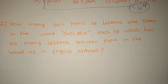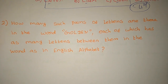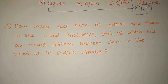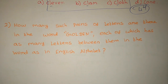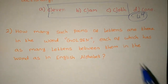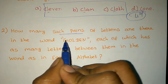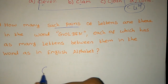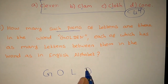How many pairs of letters are there in the word GOLDEN? Each of which has as many letters between them in the word as in the English alphabet. So what does it mean? Pairs of letters in the word. The word is GOLDEN.